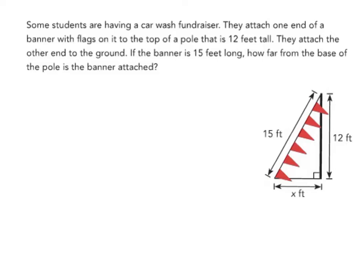So if we take a look, this banner here, the pole that's holding up the banner, and the segment along the ground form a right angle, which is indicated by the square.